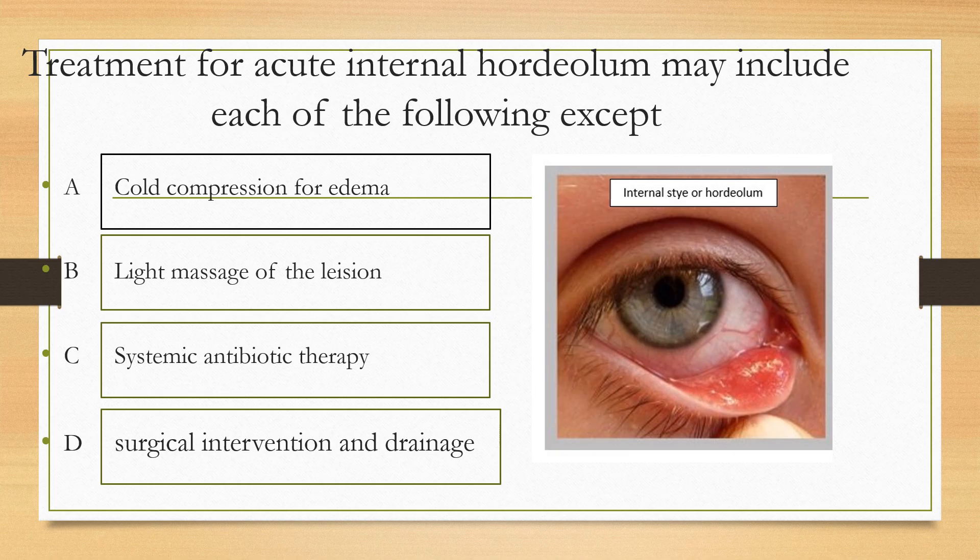Next question. The treatment for acute internal hordeolum may include each of the following except: option A cold compression, option B light massage, option C systemic antibiotic therapy, option D surgical intervention and drainage. The answer is cold compression — we should give hot compression, so cold compression is the incorrect option.